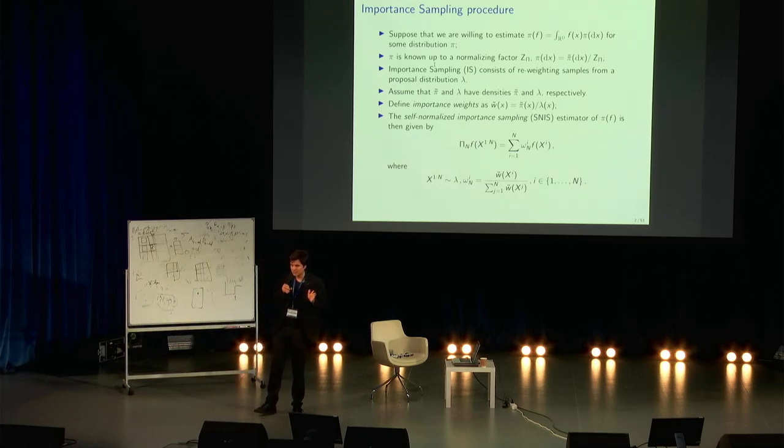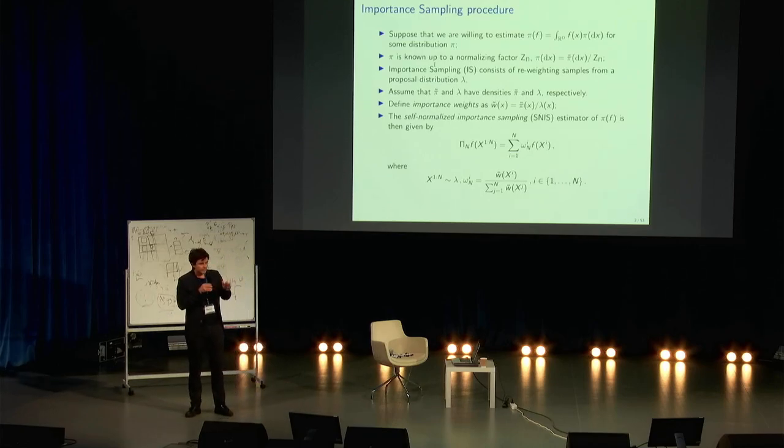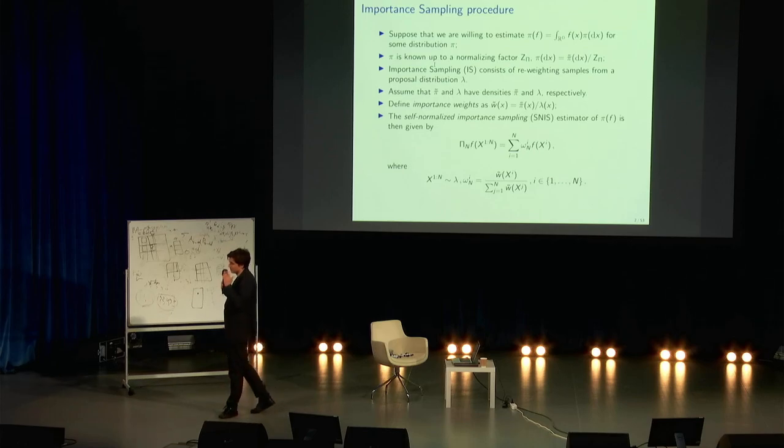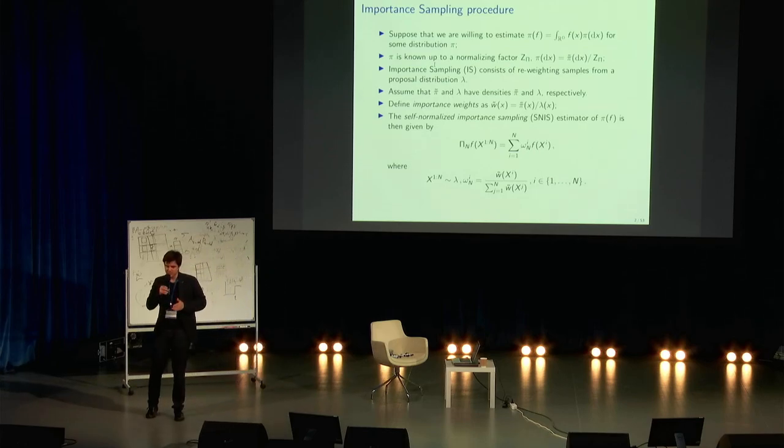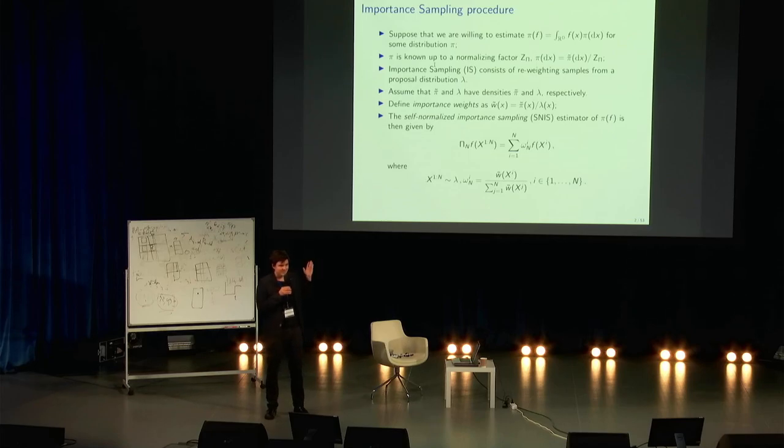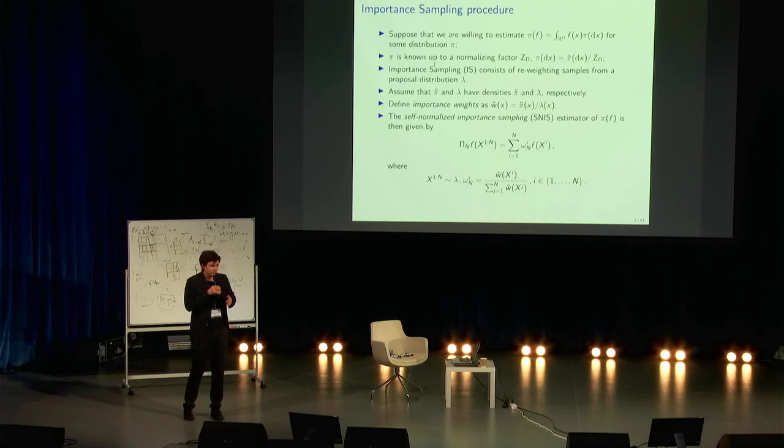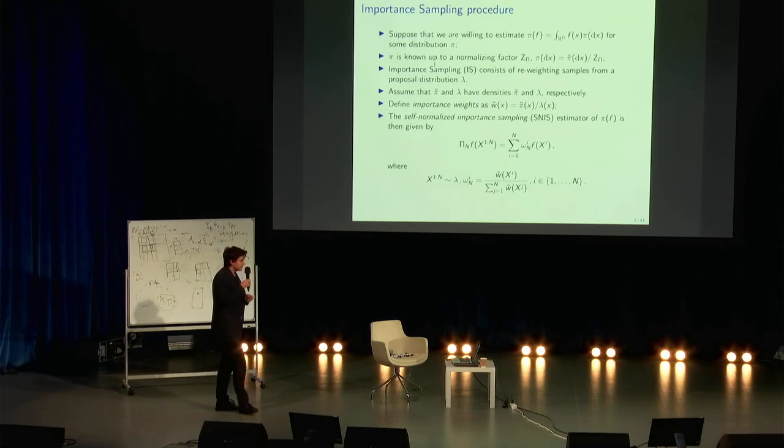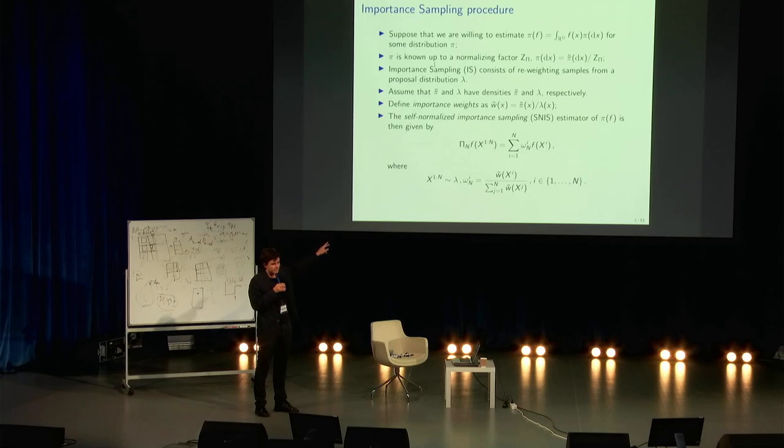In this case, one of the standard and well-known approaches is the so-called importance sampling. Instead of sampling from pi, you have some simple distribution lambda, such that pi and lambda are absolutely continuous, for example, with respect to Lebesgue measure. So they both have densities. You can generate samples from lambda. In this case, you multiply and divide by lambda under the integral. And you substitute your integral with respect to pi by the following self-normalized quantity. It is some statistics of samples from lambda, which is reweighted by the ratios of target density pi divided by the density lambda.